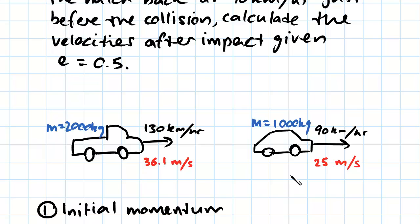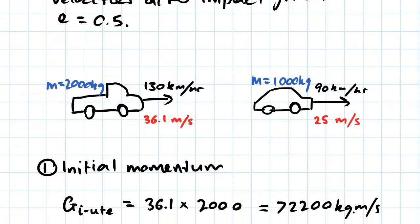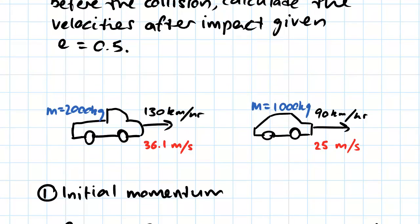We'll look at initial momentum, we'll look at final momentum, and that's going to give us one equation with two unknowns. Then we're going to use the coefficient of restitution to give us another equation with two unknowns, and we're going to solve them simultaneously.